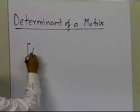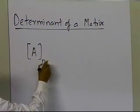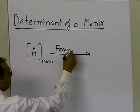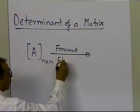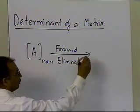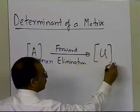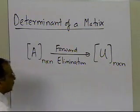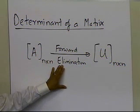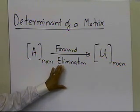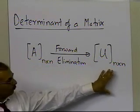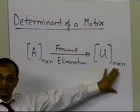If you want to find the determinant of an n-by-n matrix, you're going to apply the steps of forward elimination of the naive Gaussian method. You apply the forward elimination steps, and what you end up with is an upper triangular matrix. So you take a coefficient matrix n-by-n and end up with an upper triangular matrix n-by-n.